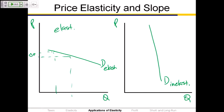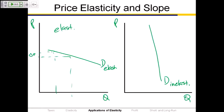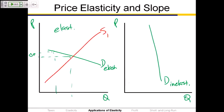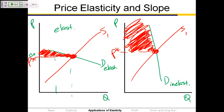We can also look at the relationship between elasticity and consumer surplus. Draw in a supply curve, find the equilibrium point, and dash over the price P-star. Consumer surplus is the area above the price and below the demand curve. Who gets more consumer surplus — markets with relatively elastic demand or markets with relatively inelastic demand?